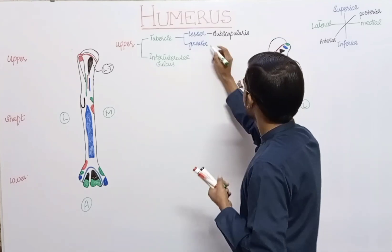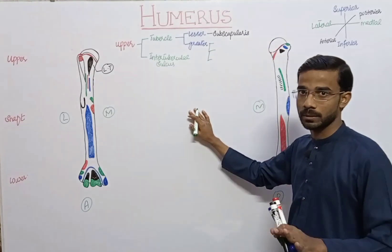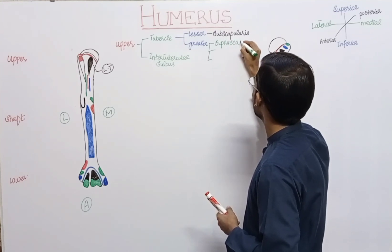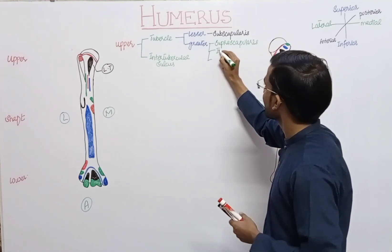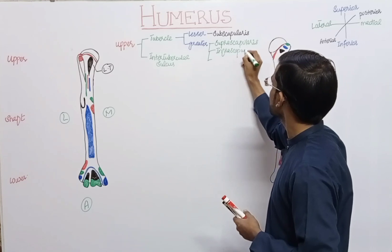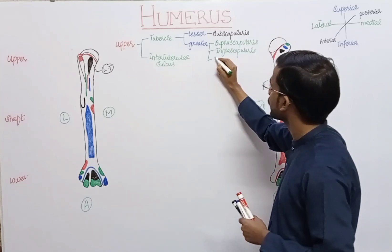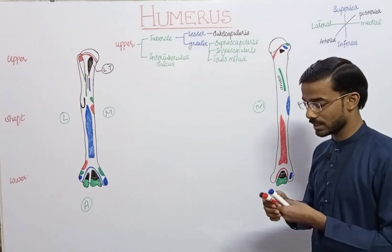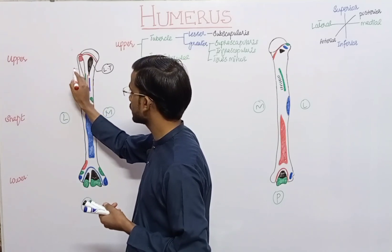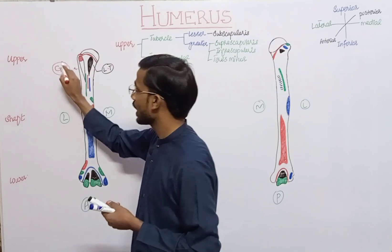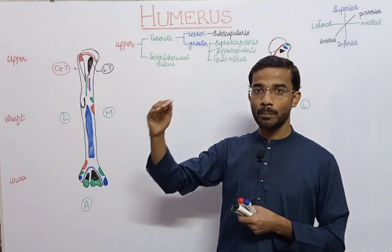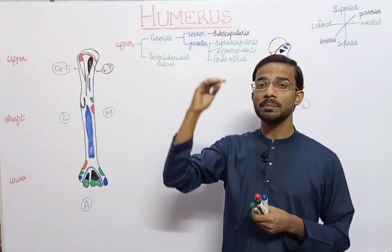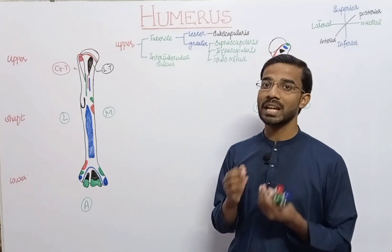Next is the greater tubercle. Three muscles will attach to the greater tubercle: first is the supraspinatus muscle, second is the infraspinatus muscle, and third is the teres minor. We divide the greater tubercle into three parts — upper, middle, and lower. At the upper part, supraspinatus attaches; at the middle part, infraspinatus attaches; and at the lower part, teres minor attaches.